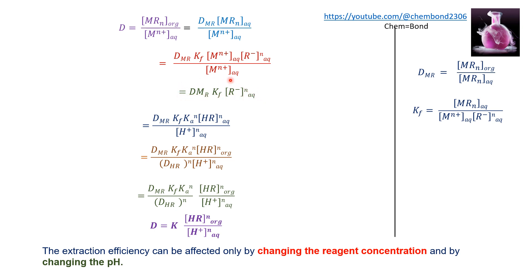Next, the value of R⁻ is substituted using the ionization constant formula: Ka equals [H⁺][R⁻] divided by [HR] in the aqueous phase. Rearranging gives [R⁻] equal to Ka multiplied by [HR] divided by [H⁺]. Raising this to the power N and substituting gives the distribution ratio equal to D_chelate multiplied by KF multiplied by Kaᴺ multiplied by [HR]ᴺ in the aqueous phase divided by [H⁺]ᴺ.